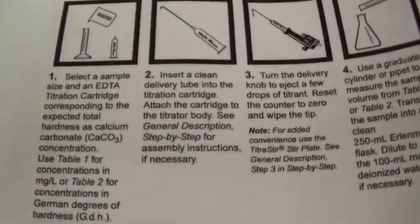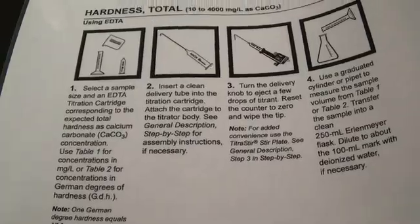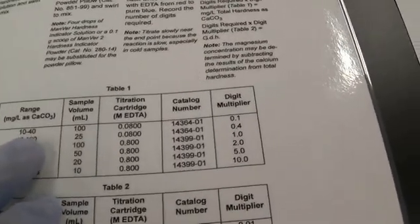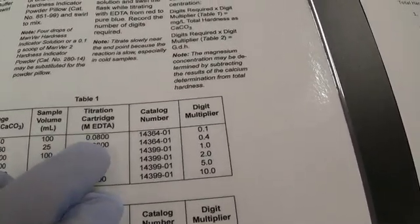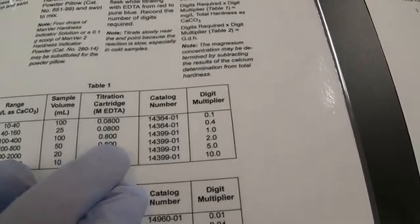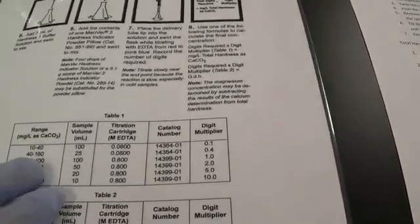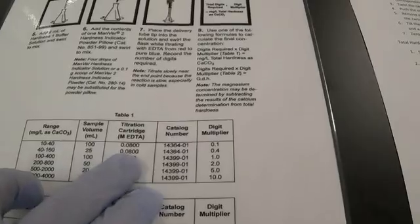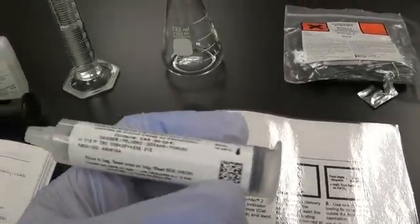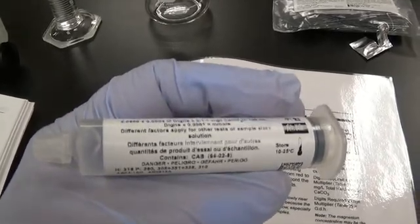I'm going to go here to number one. I selected my sample size and my EDTA cartridge, which was right here. Cartridge 0.080 or 0.800. Since I'm doing this one, I'm doing the 0.080 cartridge, which is right here.